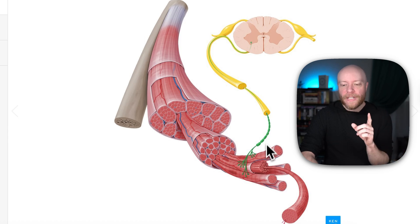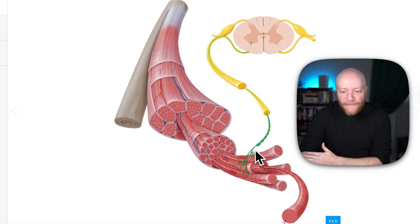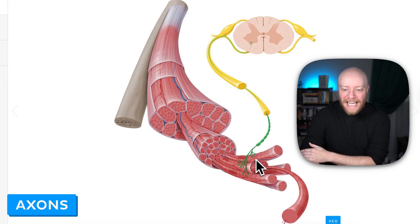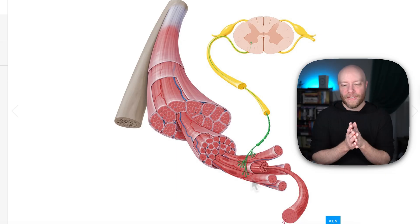But I want you to pay very close attention here. This is one individual neuron. Yet we can see that its axons are going to be connecting to one, two, three separate muscle cells in this particular image.